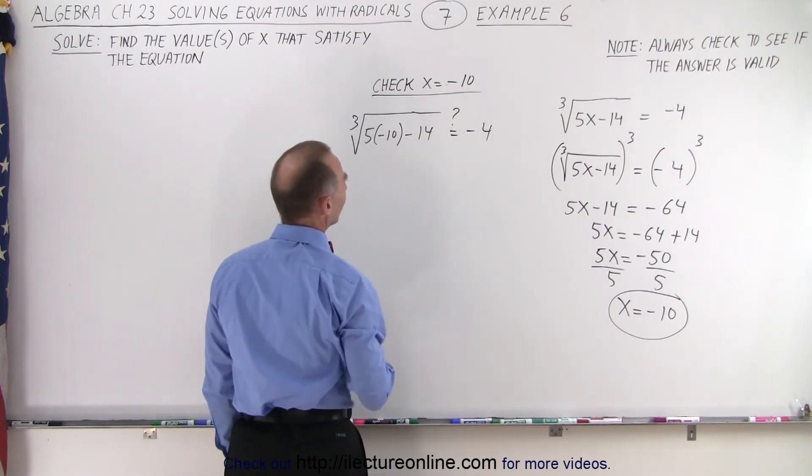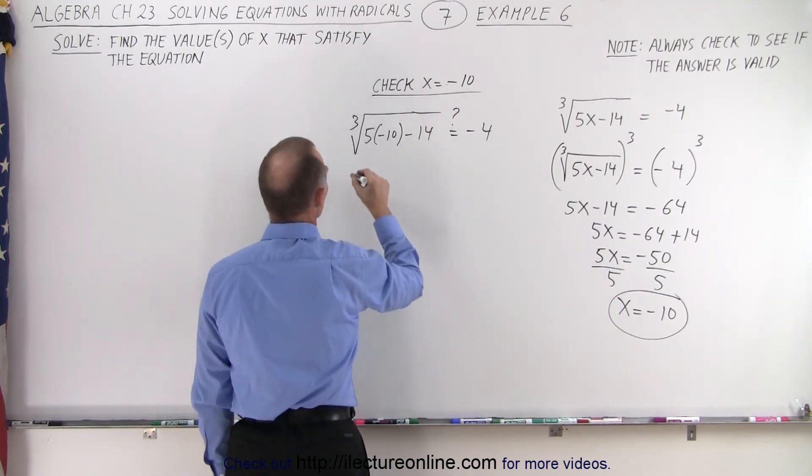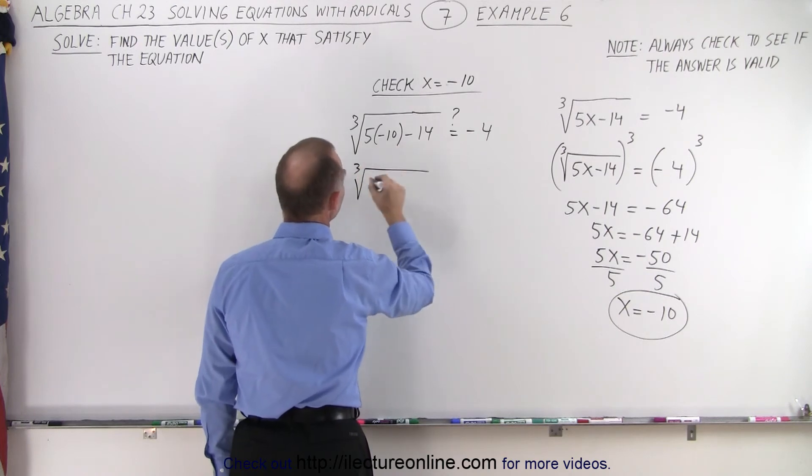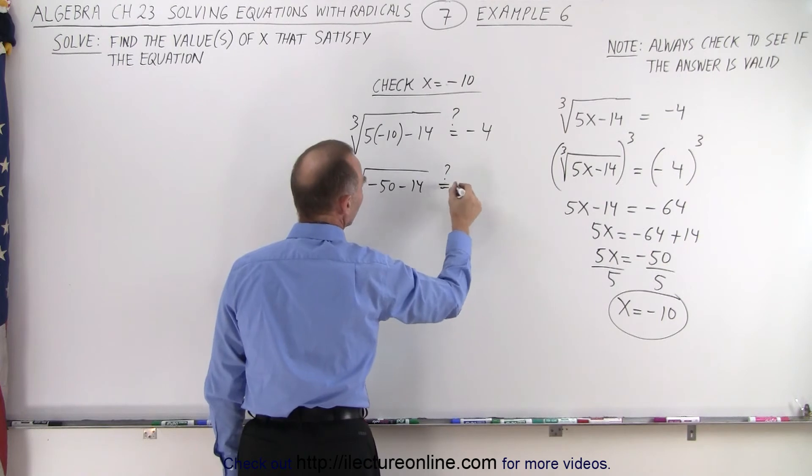Of course, we don't know if that's correct, if that's equal. So we have the cube root of negative 50 minus 14. Is that equal, question mark, equal to negative 4?